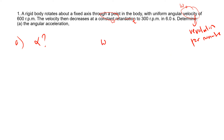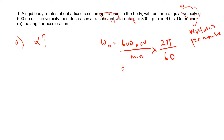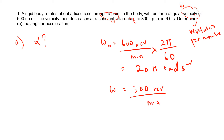Omega naught equals 600 revolution per minute. We need to change this into rad/s (rad s⁻¹). One revolution is 2π, so we multiply by 2π and divide by 60, giving us omega naught = 20π rad s⁻¹. Then omega equals 300 revolution per minute, multiplied by 2π divided by 60, giving us omega = 10π rad s⁻¹.